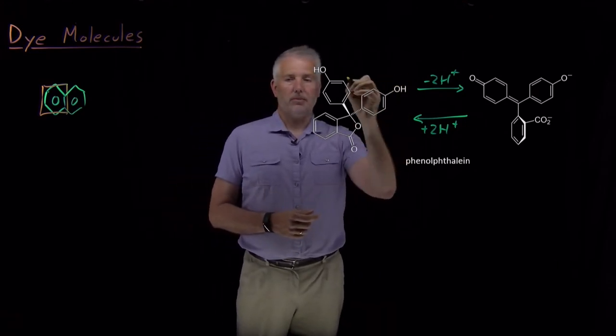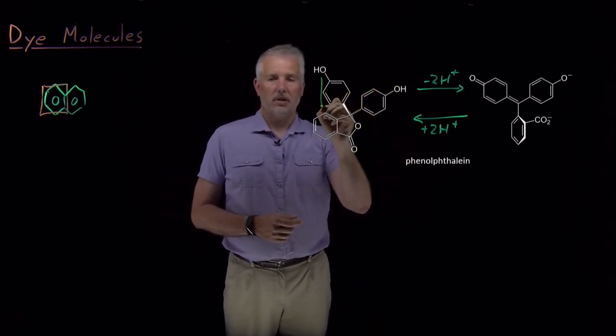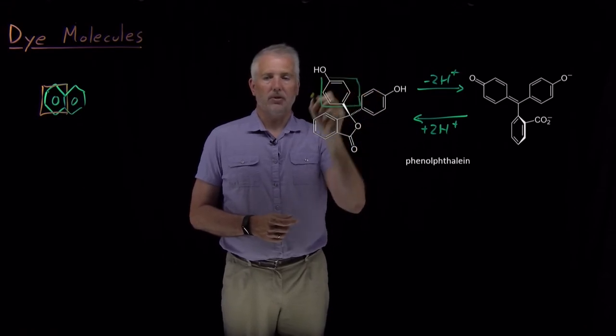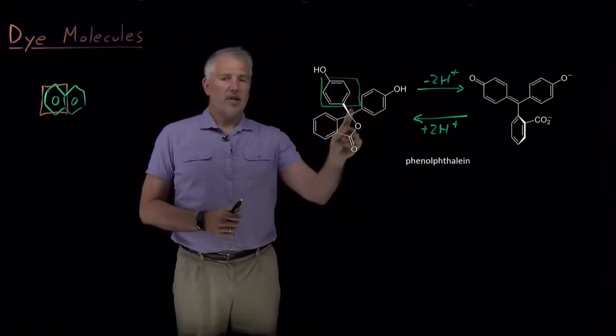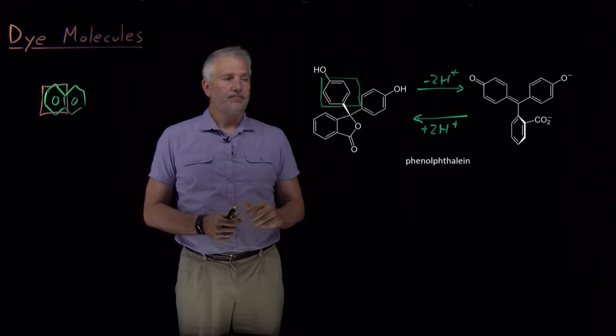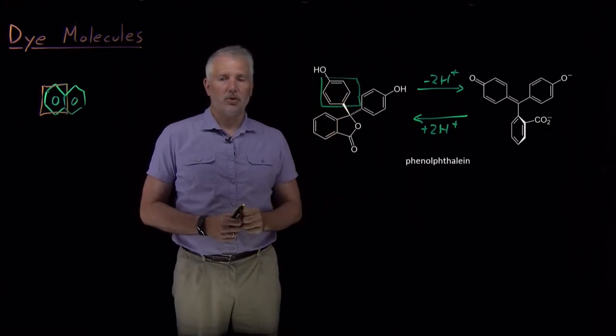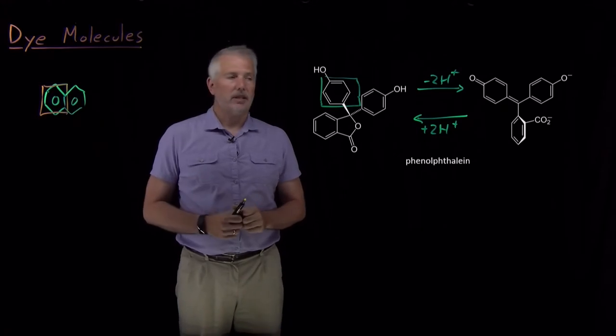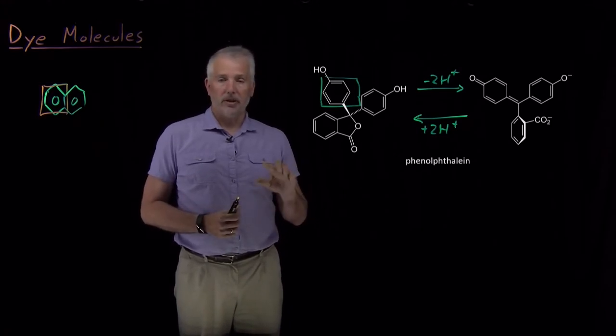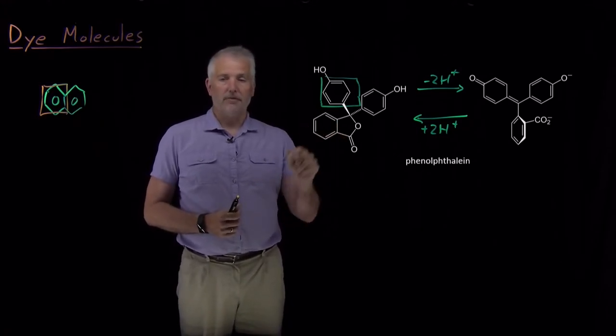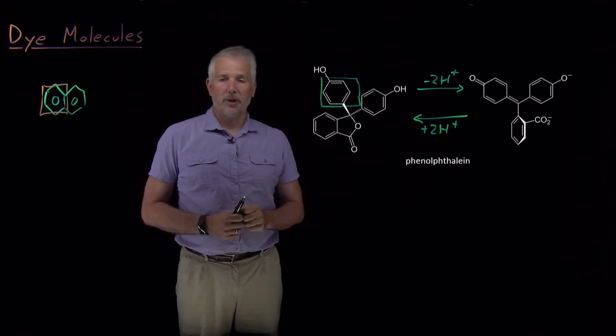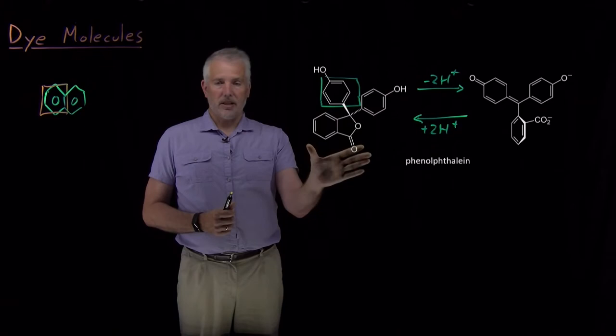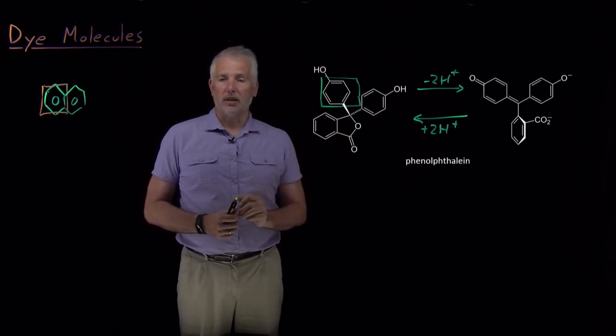Here we see a conjugated portion of the molecule, a benzene ring not conjugated with the rest of the molecule, so this molecule is going to absorb in the ultraviolet portion of the spectrum just like benzene does. The boxes are not large enough for those pi conjugated electrons to absorb light in the visible portion, so a solution containing this molecule is clear, it's colorless.